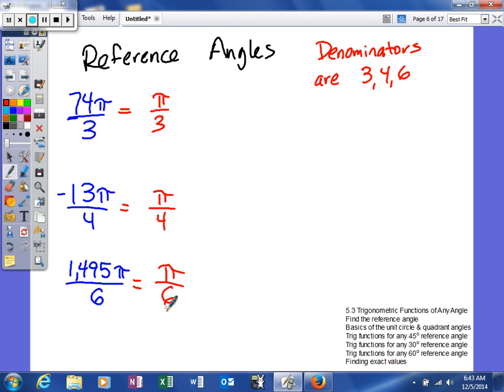So if your denominators are 3, 4, or 6, all you have to do to find your reference angle is it's gonna be π over your denominator. So kind of keep that in mind. Easy way to find reference angles for radians.